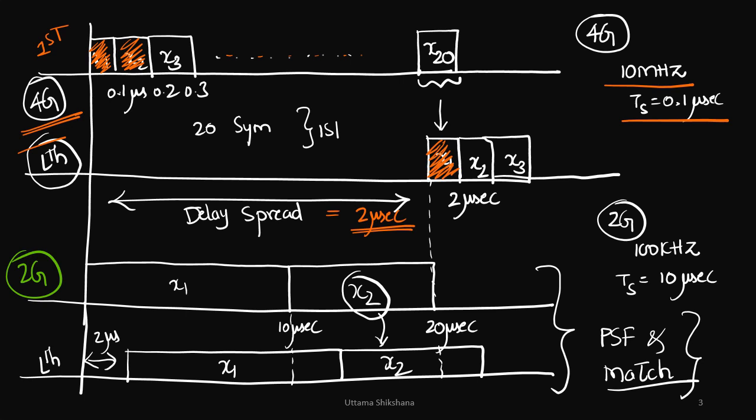At this point, if you see, the receiver is also receiving 20th symbol. If you clearly see, the 20th symbol is interfering with the first symbol.